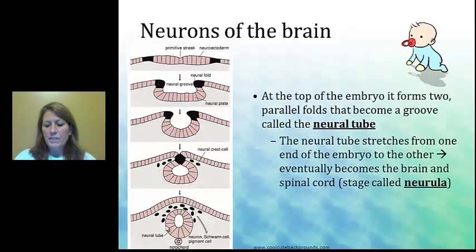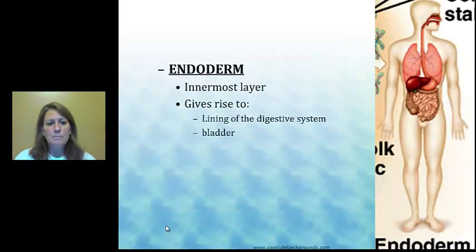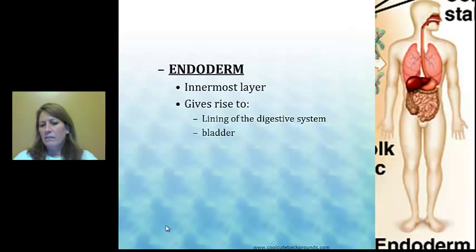Moving in is the mesoderm. Meso means middle, and this is the bulk of all of our internal organs and systems — you can read through that list and see it is primarily almost every system. And then the endoderm — endo means inside layer — and its primary focus is the digestive system. The mesoderm takes care of all of the major organs and their systems, except for the digestive system.